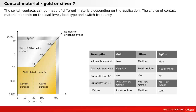The switch contacts can be made of different materials depending on the application. The choice of contact material depends on the load level, load type, and switch frequency. The diagram shows the recommended contact material in relation to voltage and current load. The arrow pointing up and to the right indicates the number of switching cycles. In control applications, there are typically high switching frequencies. For this application, gold contacts are recommended if the electrical load is low. For high electrical loads, silver or silver alloy, AGCDO, is recommended.